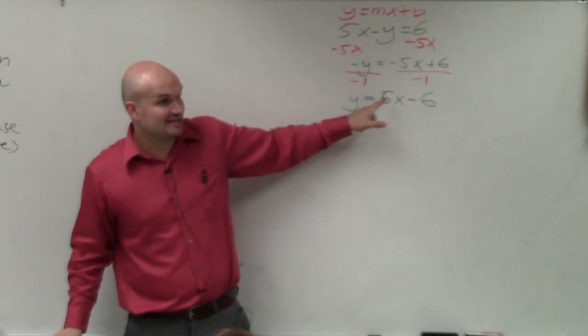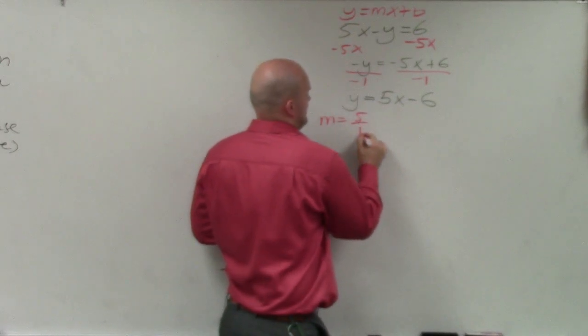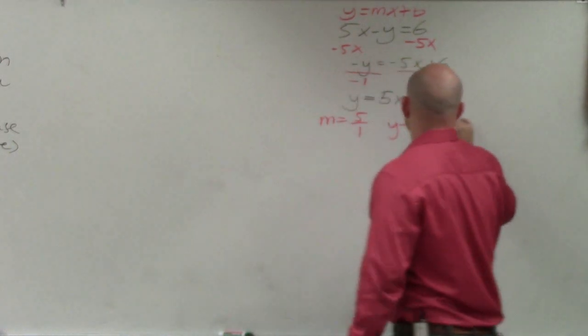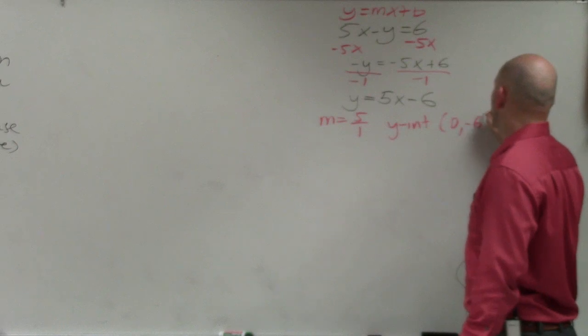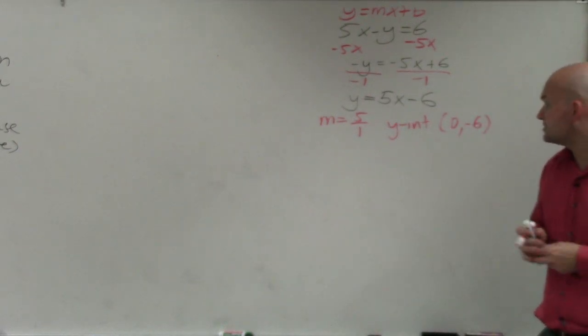Now my slope, you could say, is positive 5 over 1, and my y-intercept is 0 comma negative 6. OK, so we'll just go ahead and do the same thing.